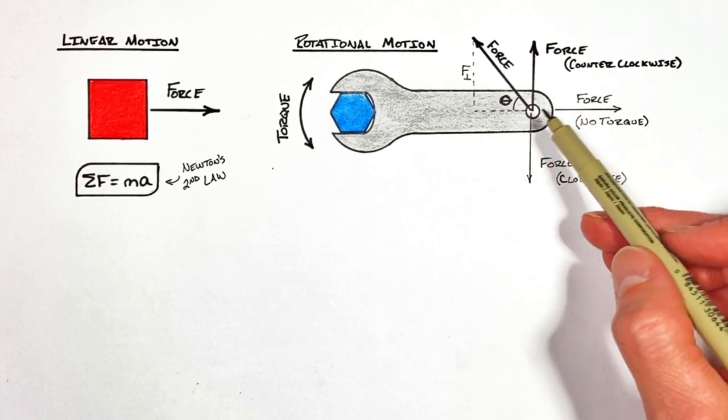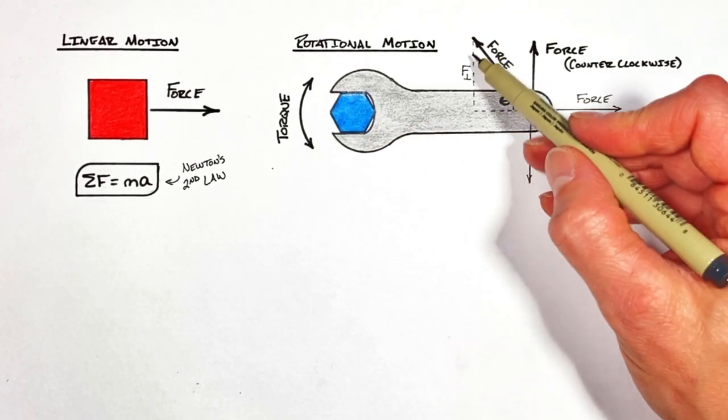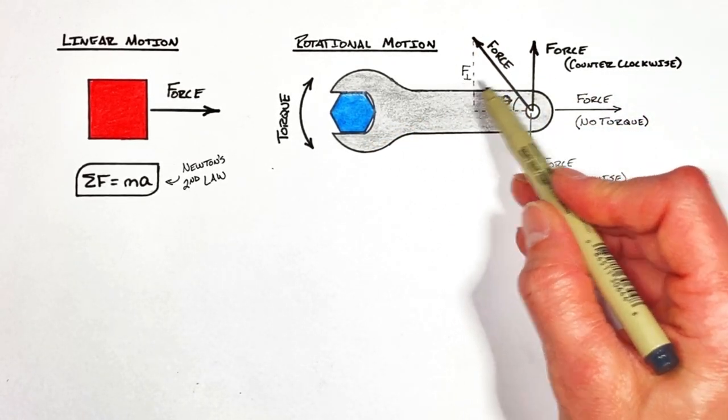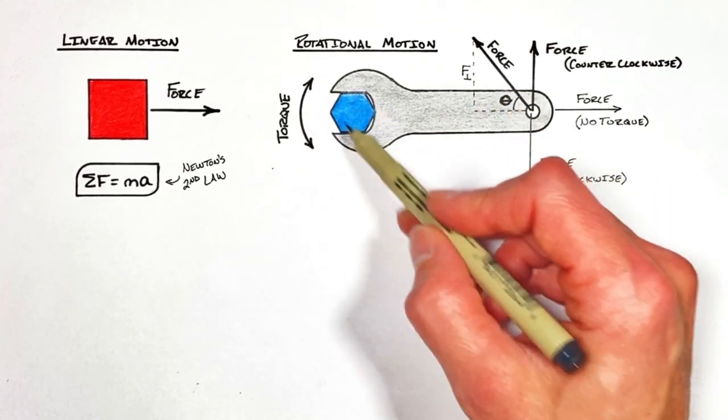And the important takeaway there is that we can have a force acting at an angle on a wrench, but really it's only the component of force which is perpendicular to that wrench or lever that's going to produce torque.